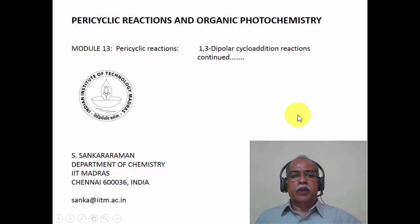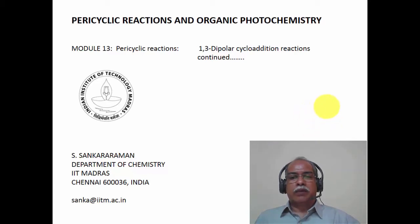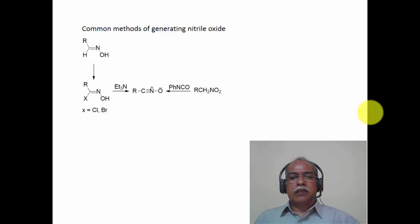Hello, welcome to module 13 of the course on pericyclic reactions and organic photochemistry. We will continue with 1,3-dipolar cycloaddition reactions in this module. In the earlier module 12, we considered the 1,3-dipolar cycloaddition reactions of azomethine ylide and nitrile oxide, which belong to the category of allyl anion type of 1,3-dipolar systems. Now we will consider the propargyl-allenyl type of 1,3-dipolar system.